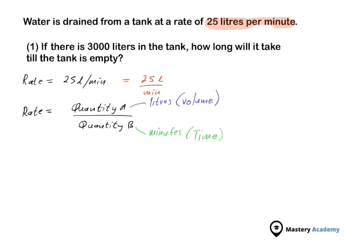Rewriting the formula: rate equals volume over time. Now we make what we're looking for the subject of the formula. Reading question one again: if there is 3,000 liters — they are giving us the volume. So volume is 3,000 liters.